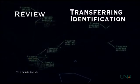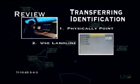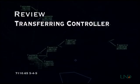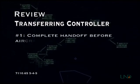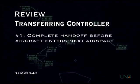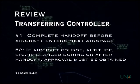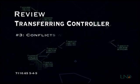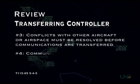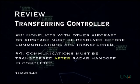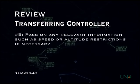Three methods may be used to transfer radar identification of an aircraft: physically pointing to another controller's radar display, using landline communications, and using automated handoff capabilities. The controller initiating a transfer has five responsibilities. First, the handoff must be completed before the aircraft enters the receiving controller's airspace. Second, any changes to the aircraft's heading, speed, or altitude made during or after the handoff must be coordinated with the receiving controller. Third, any conflicts with other aircraft or airspace boundaries must be resolved before communications are transferred. Fourth, communications must be transferred after the radar handoff is completed. Finally, any information about the aircraft, such as altitude or speed restrictions, must be relayed to the receiving controller.